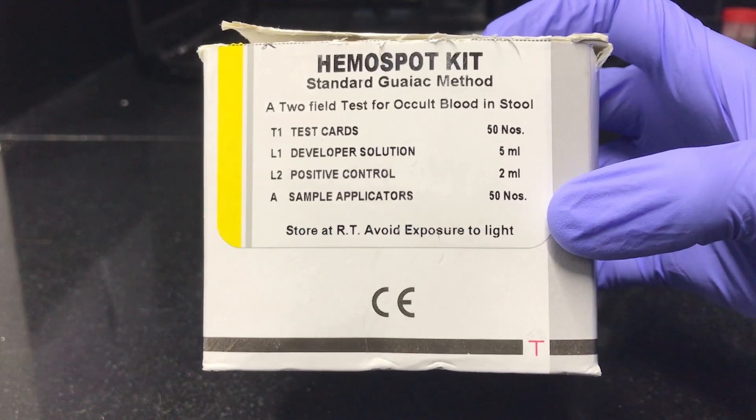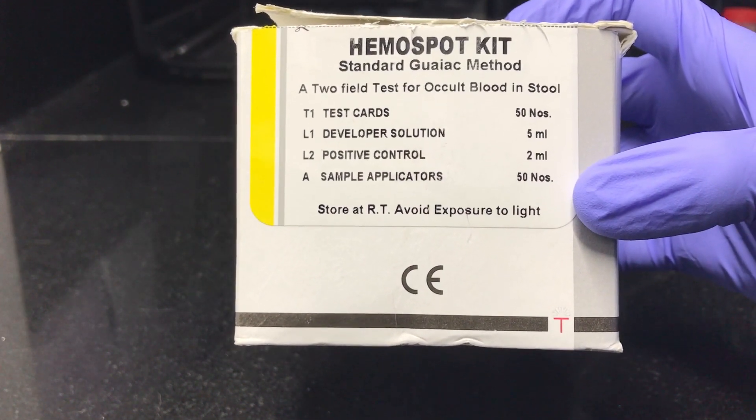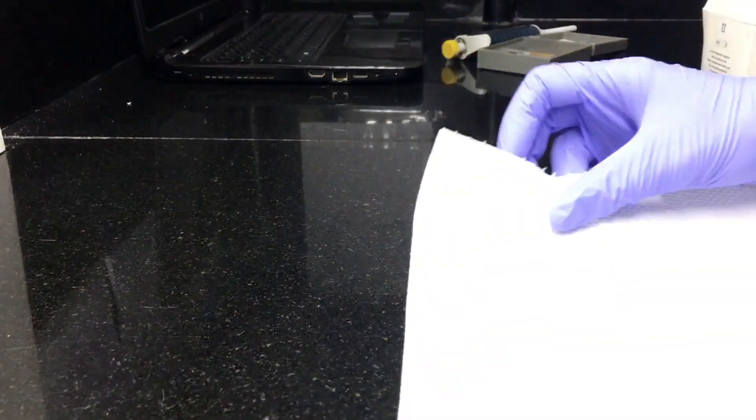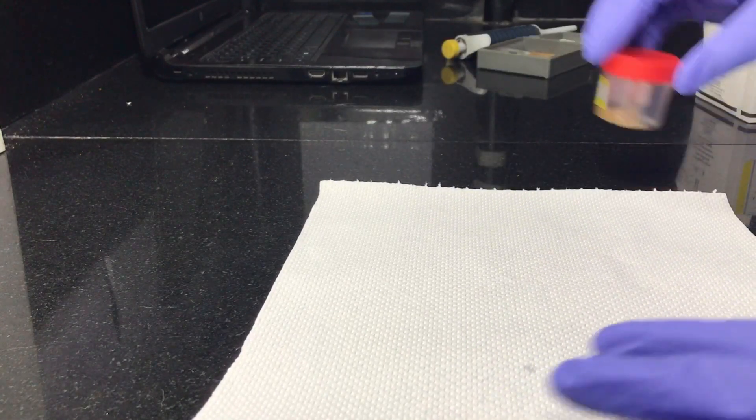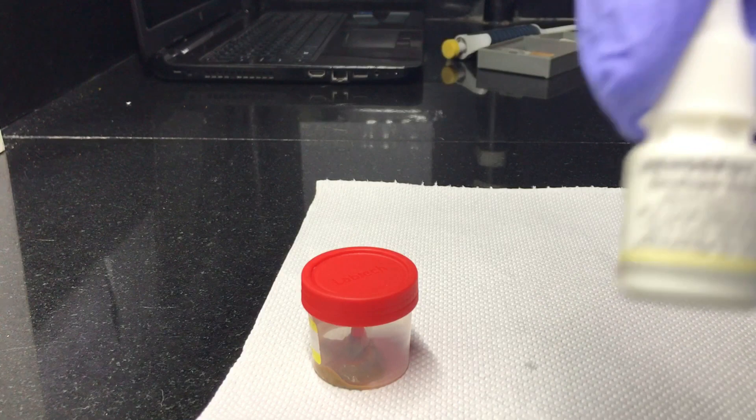Let's see how to do a fecal occult blood test with the hemo spot kit. To begin with, spread a clean tissue paper and keep your fecal sample and hemo spot developer solution ready.